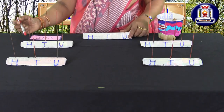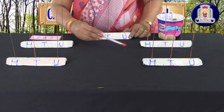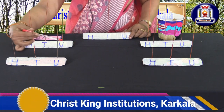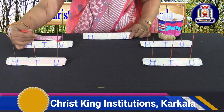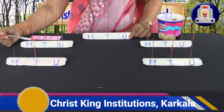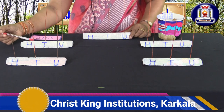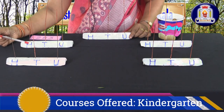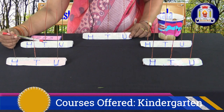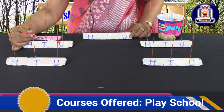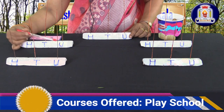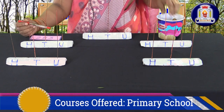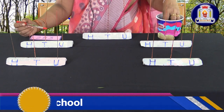My dear students, can you see these abacus? These abacus have three spikes, and each spike has some letters: H, T, U. H stands for hundreds place, T is for tens place, and U is for units place. I will use some bits according to the number.